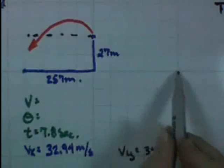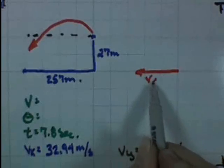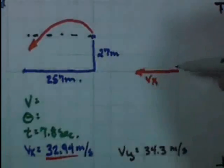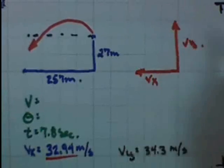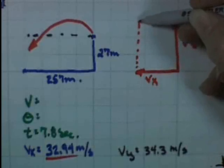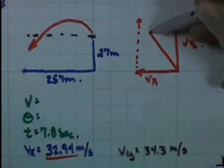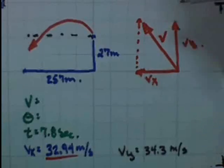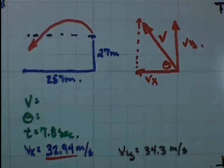Alright, we've got our velocity in the x-direction and our velocity in the y-direction. We can resolve it into a right triangle where the hypotenuse is our actual velocity, and we can find the launch angle. And there you go — good luck with those. Golf is so much fun!